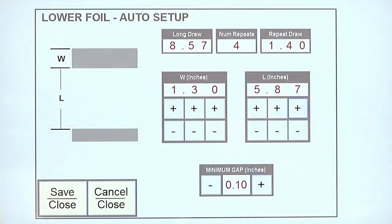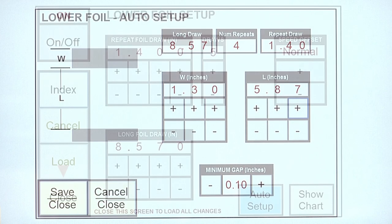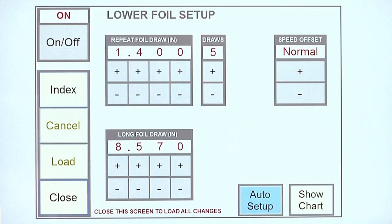Optimizing the foil imprint spacing by adjusting the minimum gap is not required. After entering the W and L measurements, press the save close button to return to the upper or lower foil setup screen. The information calculated on the auto setup screen will automatically be loaded into the long, repeat, and draws data fields on the foil setup screen.